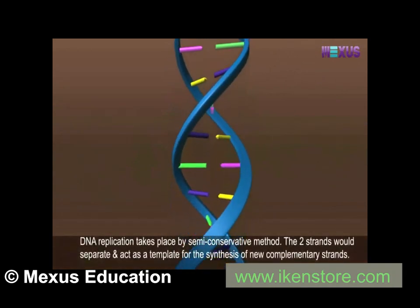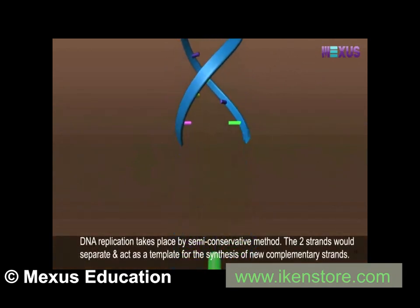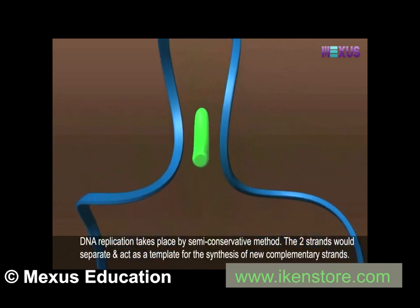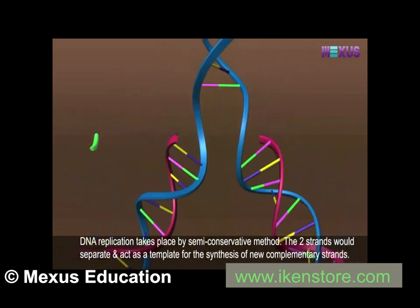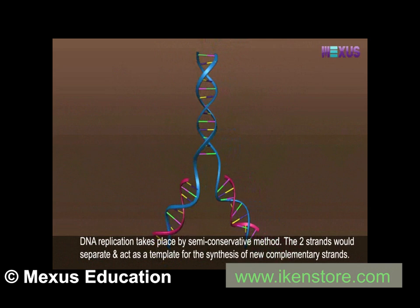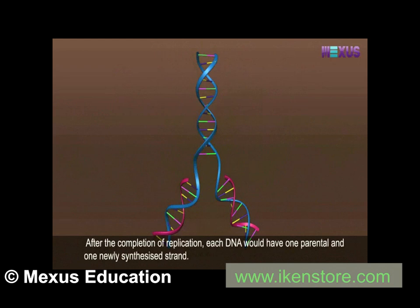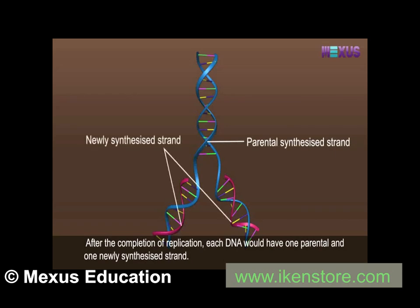DNA replication takes place by a semi-conservative method. The two strands would separate and act as a template for the synthesis of new complementary strands. After the completion of replication, each DNA would have one parental and one newly synthesized strand.